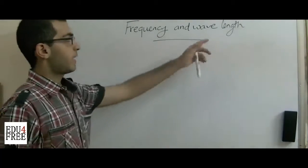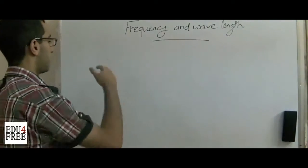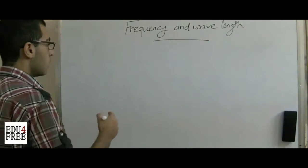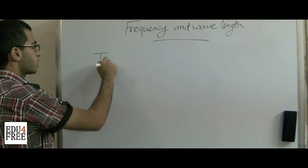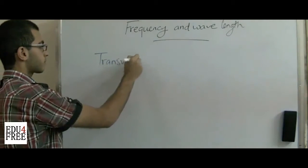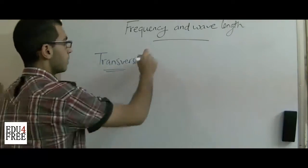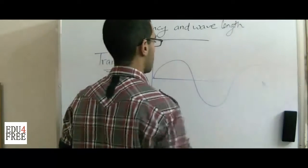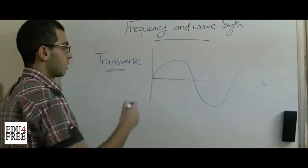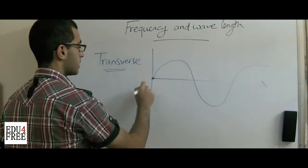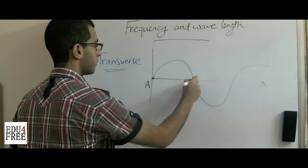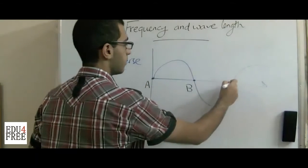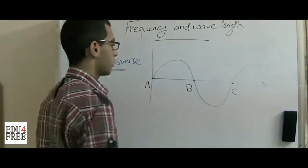First we will talk about the wavelength before the frequency. In transverse motion, we can draw the diagram of this motion like that. So, we will have here point A, point B, point C and so on.